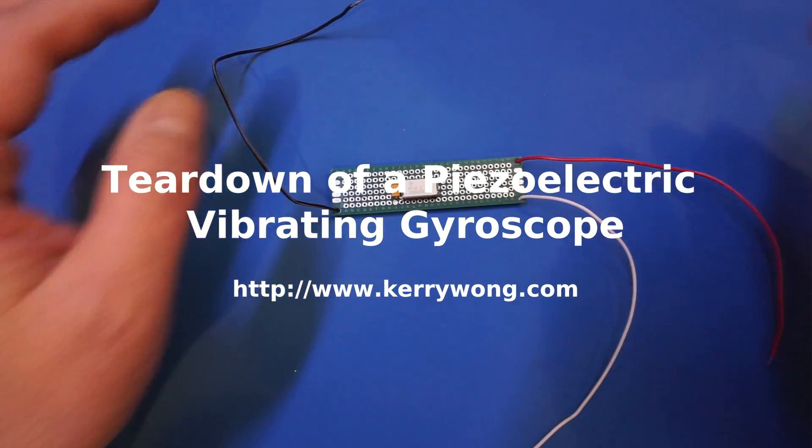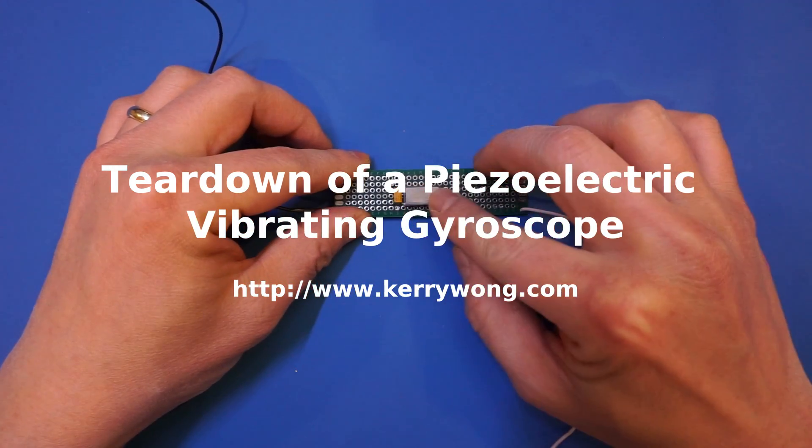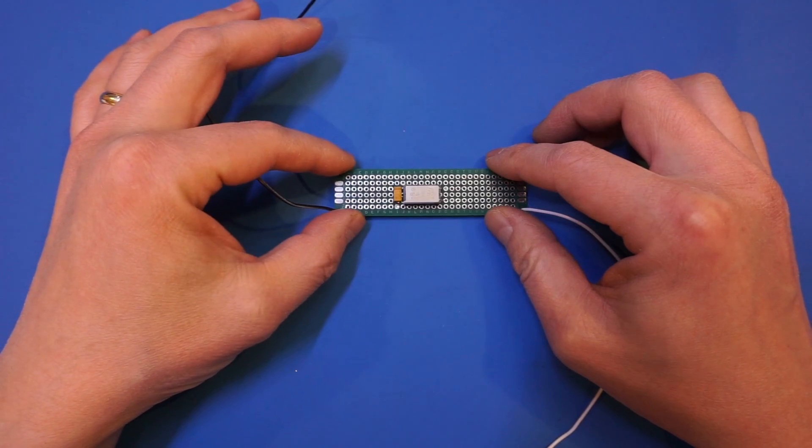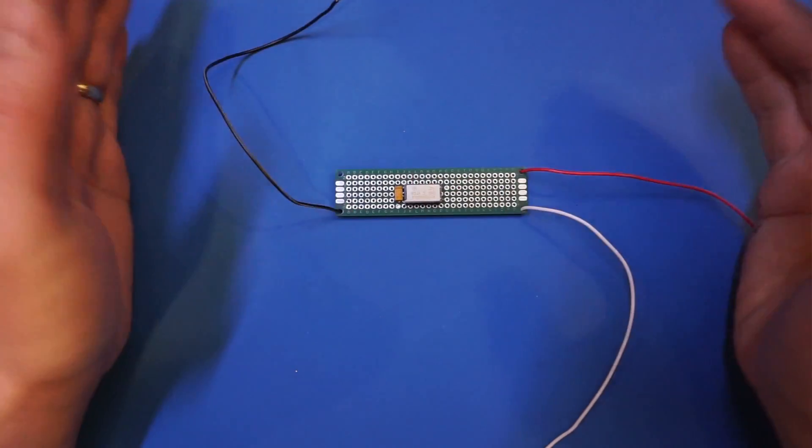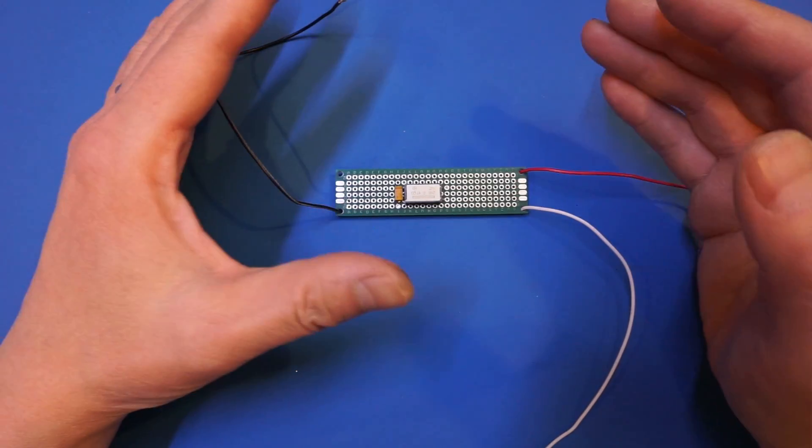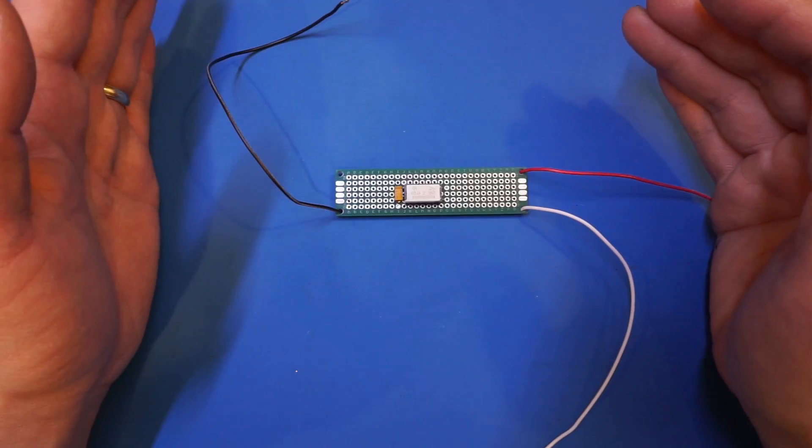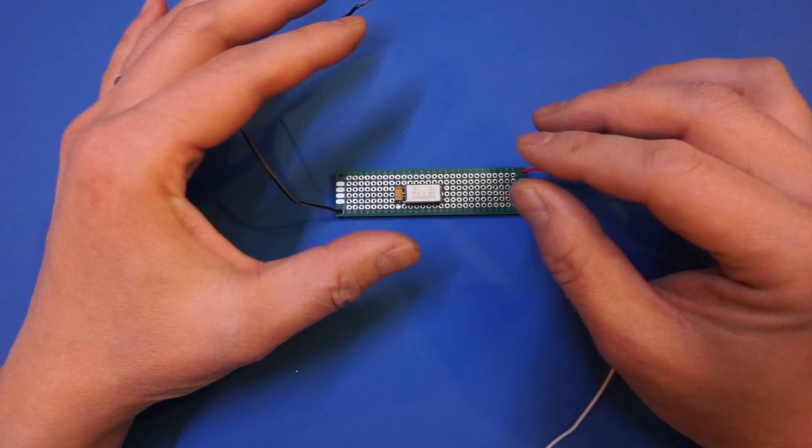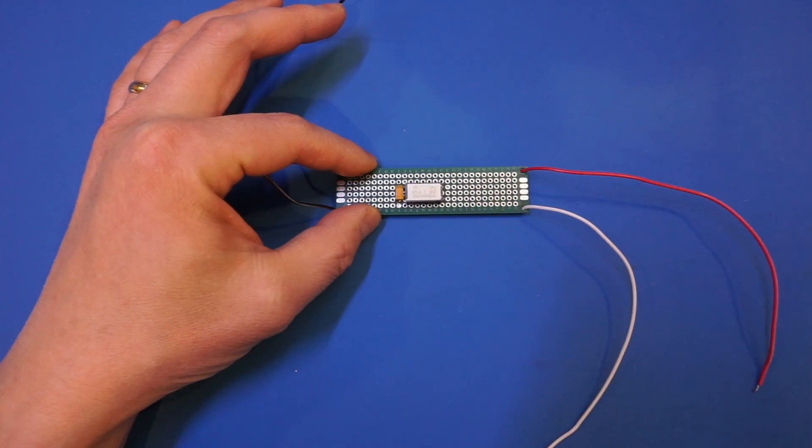Hi, I was going through my component bins the other day and found this little component here. As the title of this video suggests, this is a piezo vibrating gyroscope. Now modern gyroscopes and accelerometers are based on microelectromechanical systems or MEMS, and with the entire chip packaging measuring only a few millimeters across, this gyroscope in contrast is much larger.